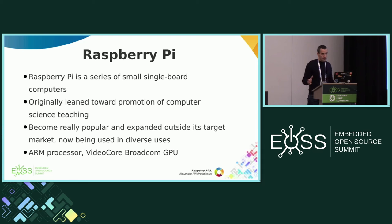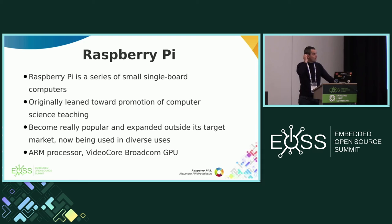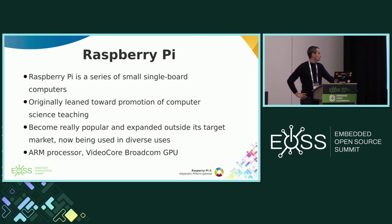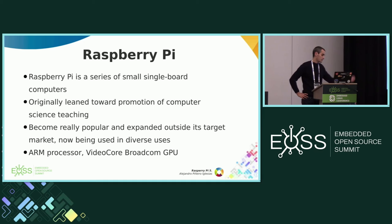What is Raspberry Pi? Raspberry Pi is a series of small single-board computers. The original purpose was really leaning towards computer science teaching, but it became very popular and expanded out of that target. Now it's also used in industry, computer science teaching, and other areas. The processor is ARM and the GPU is VideoCore Broadcom.